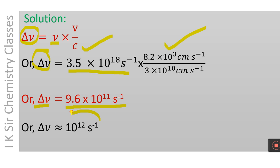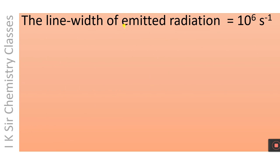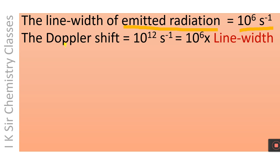Please note that the Doppler shift has a very high value of ~10¹² per second. The line width of the emitted gamma radiation with frequency 3.5×10¹⁸ per second is equal to 10⁶ per second — this will be discussed in a later video. The Doppler shift we calculated is 10¹² per second, which is 10⁶ times the line width.